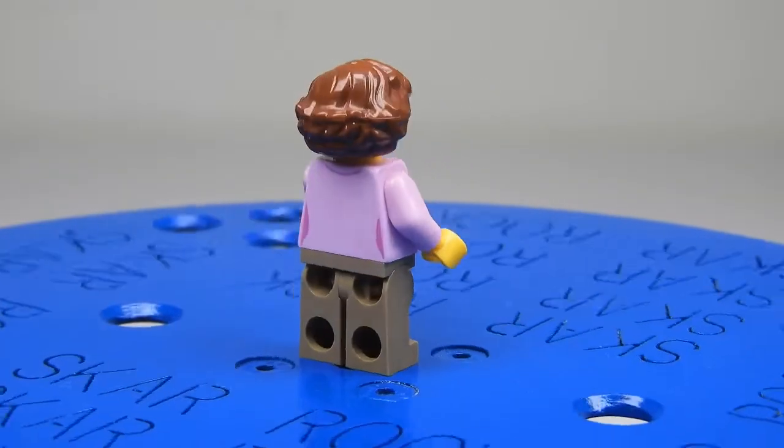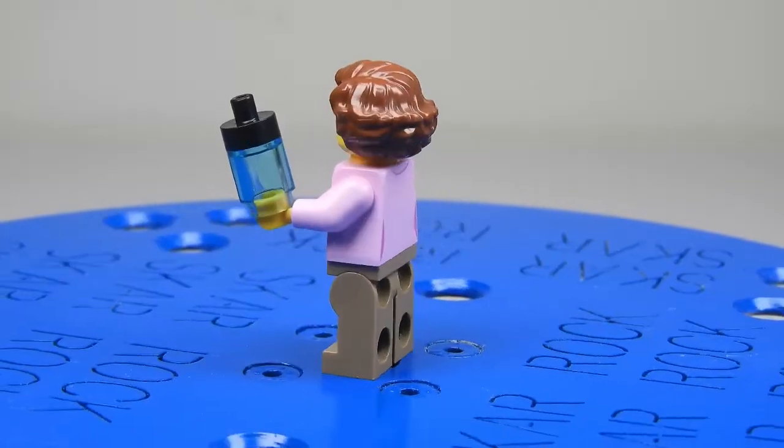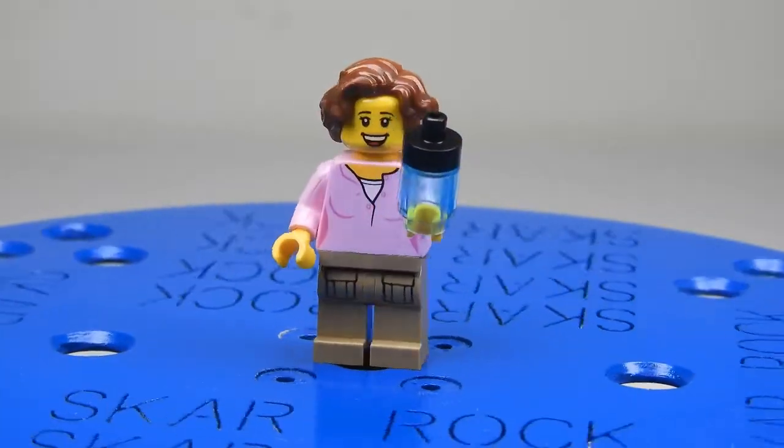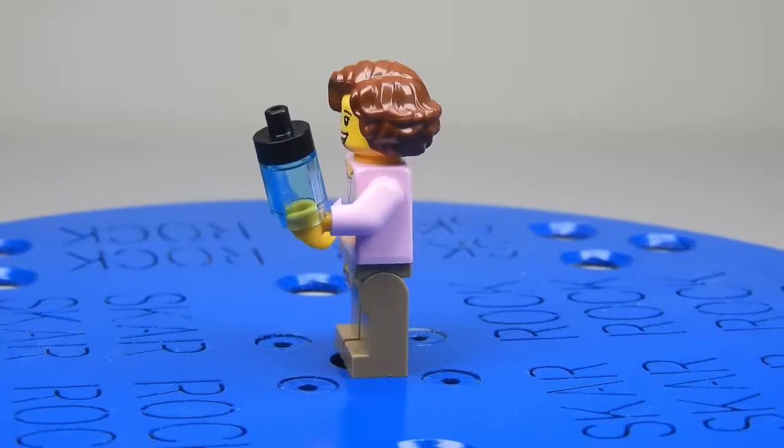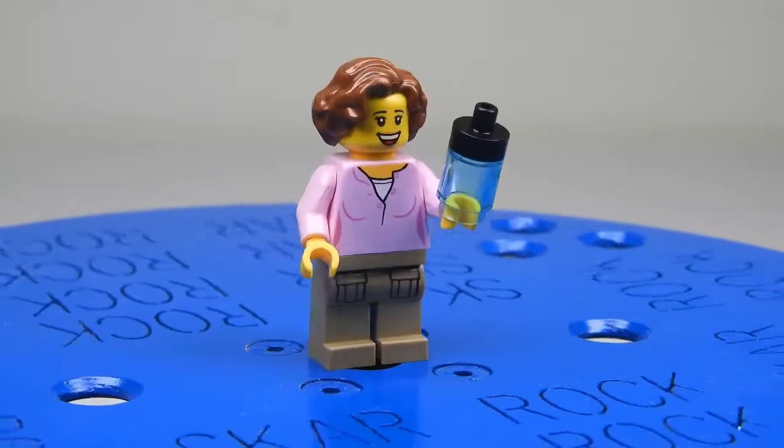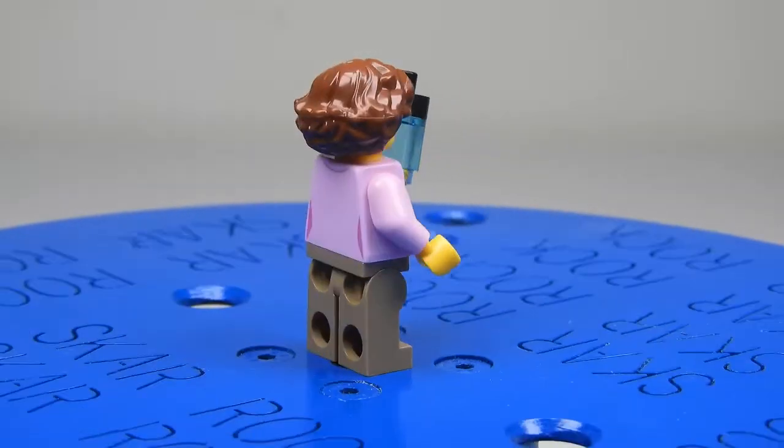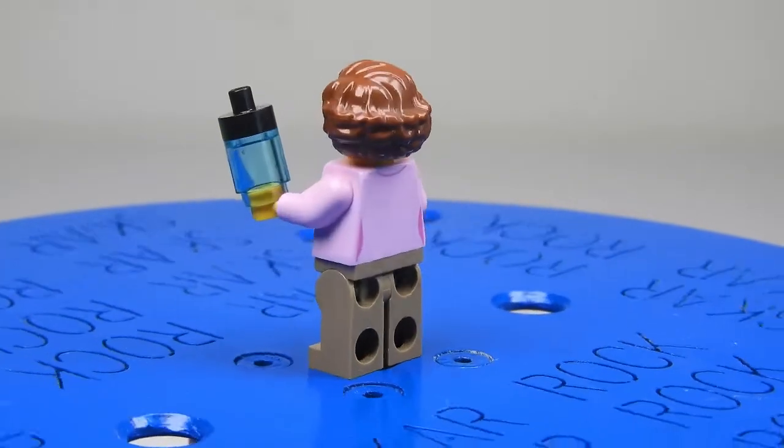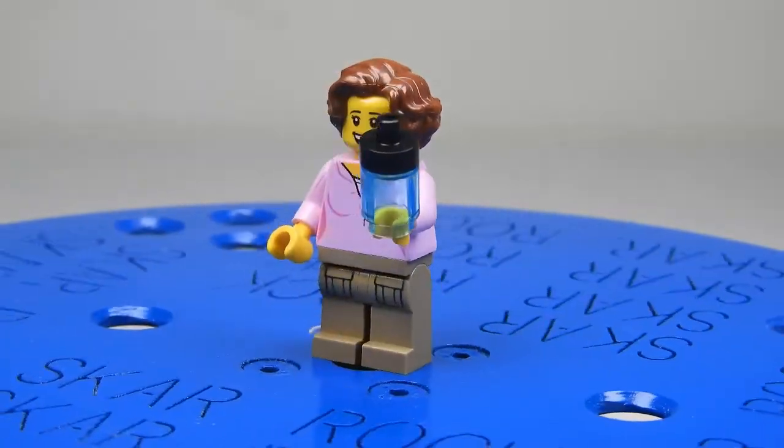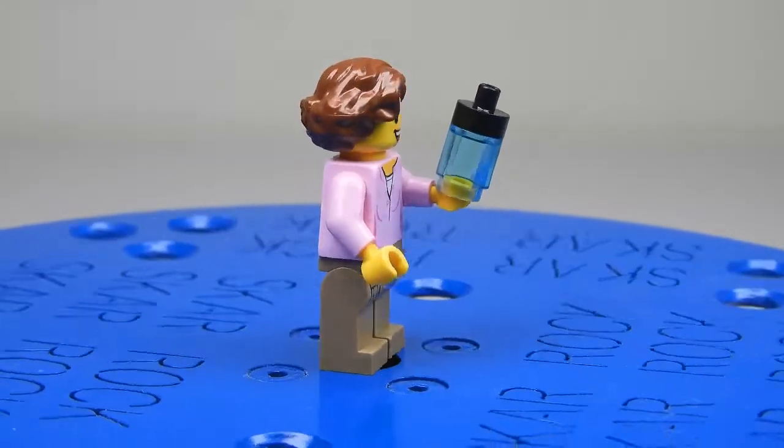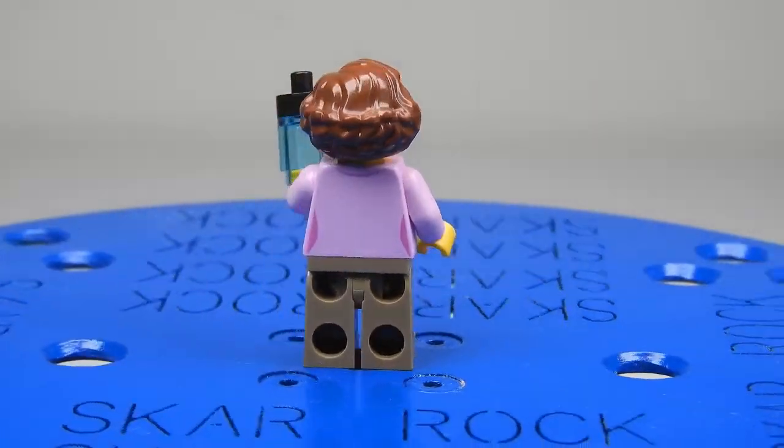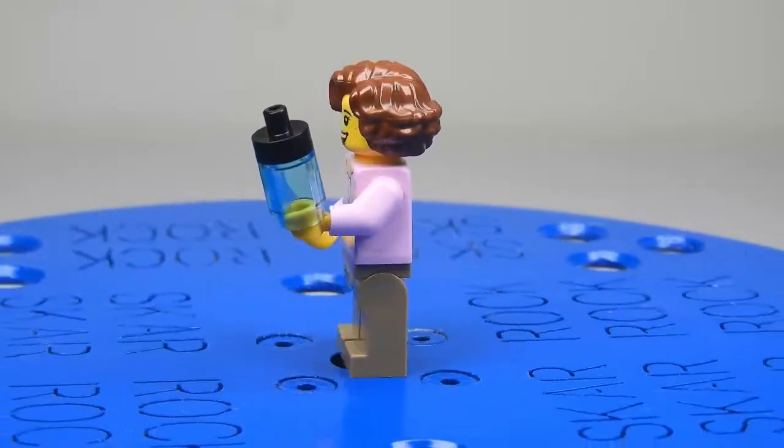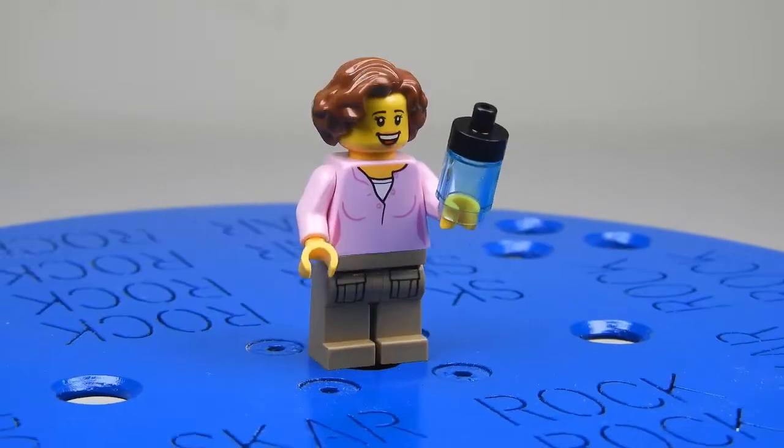Here we have another woman who has one of these cool brown hair pieces, which I haven't seen in brown before. This is the first time I've had it. She has another one of the water bottles, a pink top with seemingly a white bit underneath, and generic brown trousers with pockets.